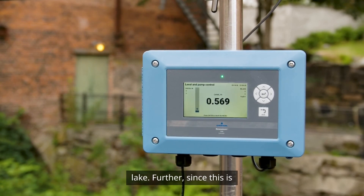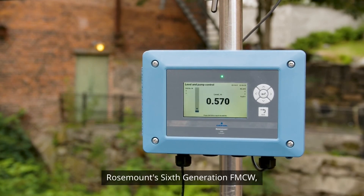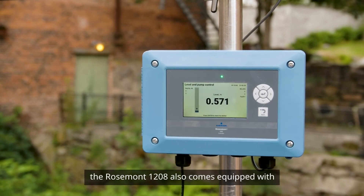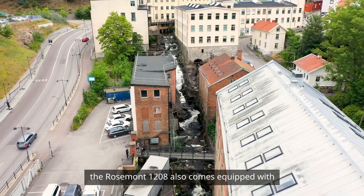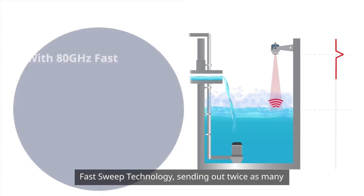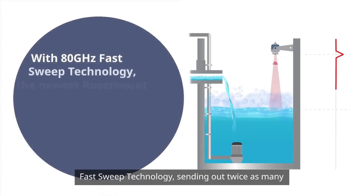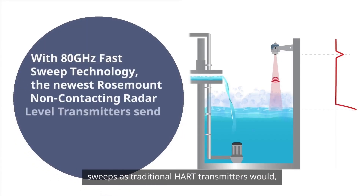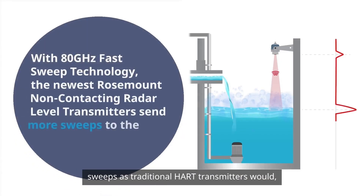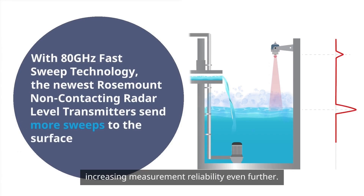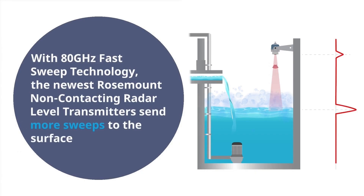Further, since this is Rosemount's 6th generation FMCW, the Rosemount 1208 also comes equipped with fast sweep technology, sending out twice as many sweeps as traditional radar transmitters would, increasing measurement reliability even further.